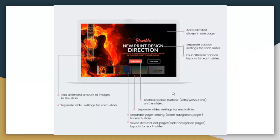Some major features of this plugin are: as you can see in the demo slider setting here, you can add unlimited images and add unlimited sliders on one page. For each slider you can have separate settings, along with separate options — including four different captions per slider, the ability to enable a button with a link, separate slider settings, pager settings, and seven different dot pager layouts.